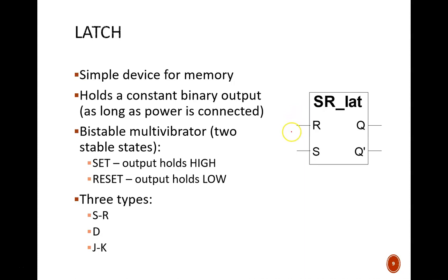In this SR latch, the instructions for behavior come from two inputs. S, or set, forces the output to be one. And R, or reset, forces the output to be zero. Essentially, there is just one output, even though there are two output ports. Q and Q' will always be complements of each other. Why two ports then? We'll see in the internal circuit that Q' must be generated by a gate anyway, so it's convenient to have that available as an output.